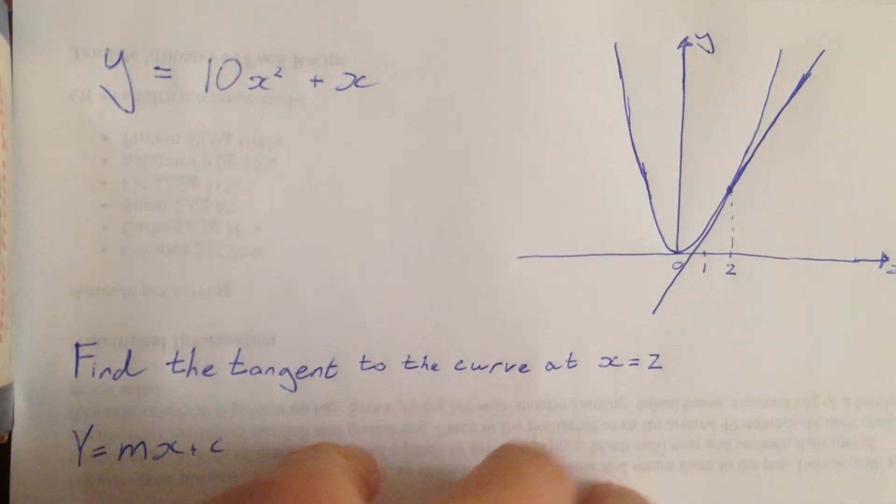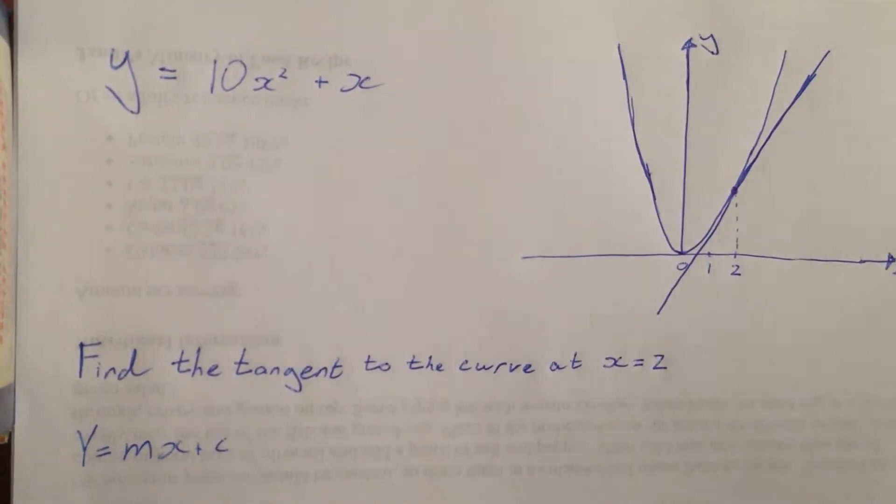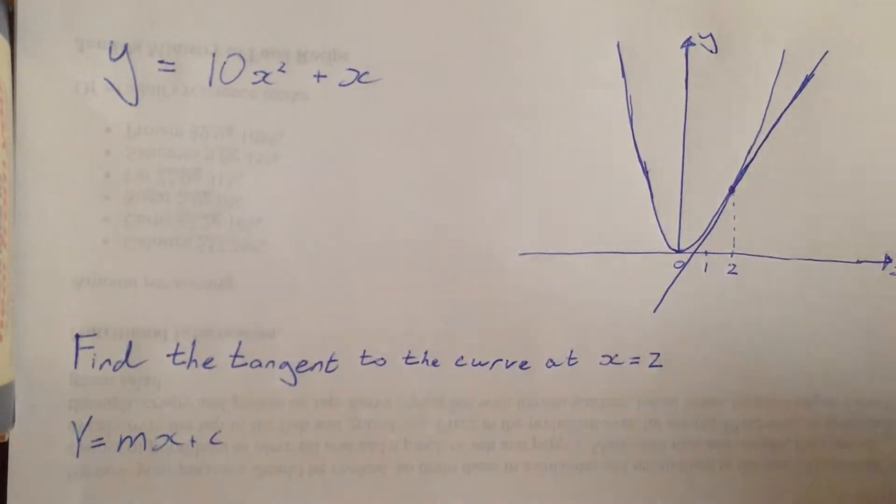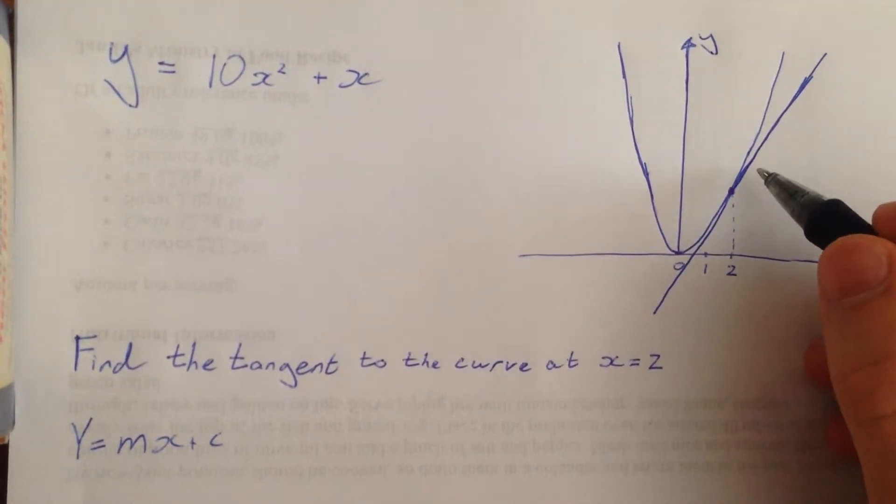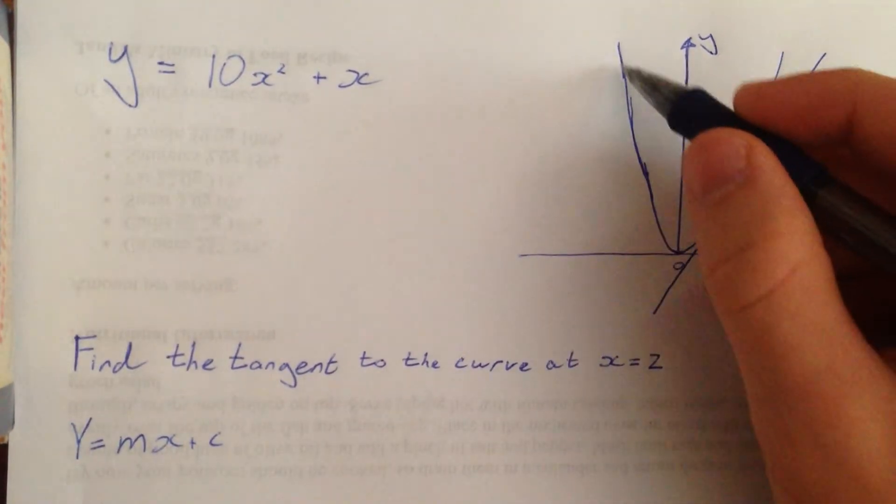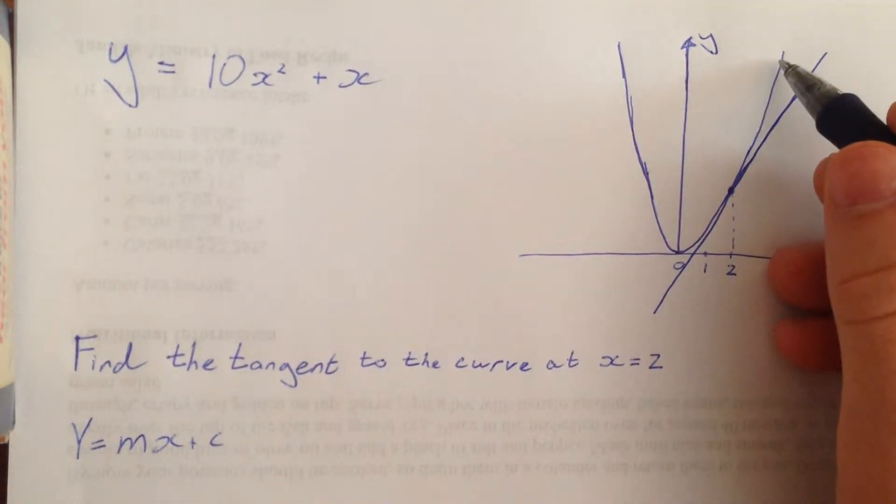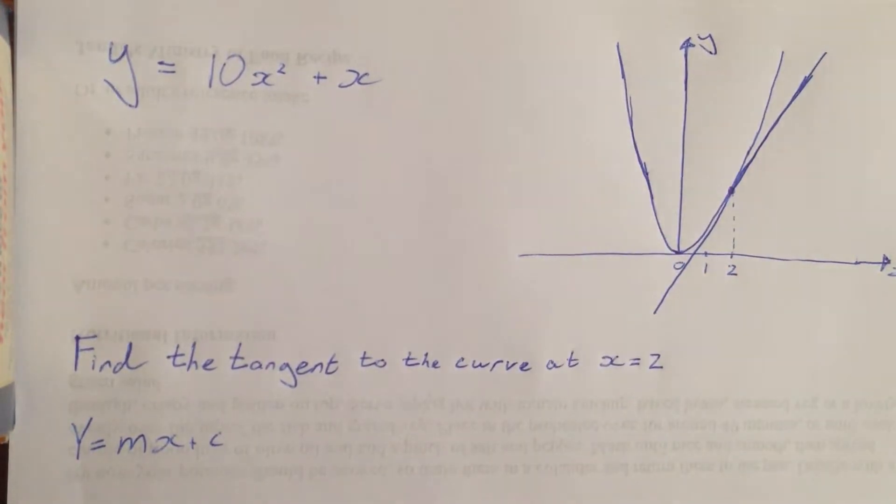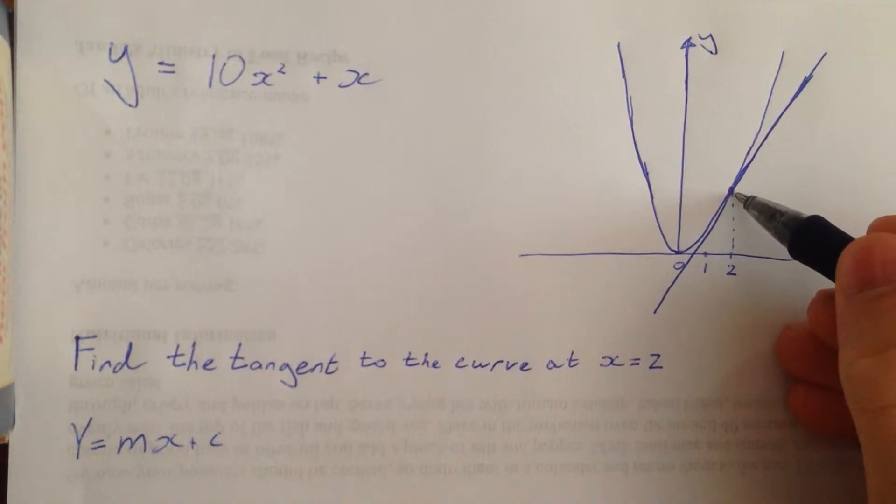We know two things. We know its gradient is going to be the same as the gradient of the curve. That's the first important thing and we'll come back to that in a second. And the second important thing is that at this point here it takes on the same value as the curve at x equals 2.